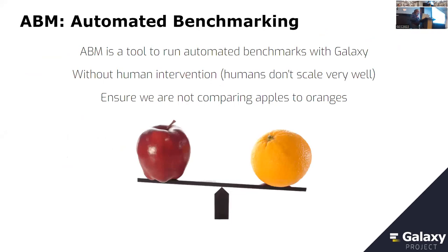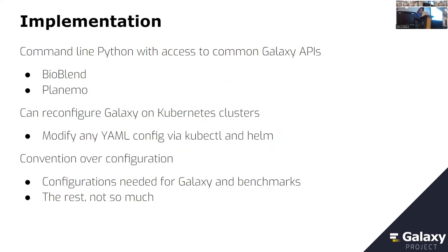We need to make sure we're running the same workflows on the same data with the same configuration to compare apples to apples. Amazon and Google have hundreds of different instance types — compute optimized, memory optimized — and when we factor in number of CPUs and amount of memory, the sheer number of possibilities makes the search space intractable. So we developed ABM — simply a Python command line tool that wraps common Galaxy APIs such as BioBlend and Planemo. Since AnVIL runs on Kubernetes, it can also interact with kubectl and Helm to reconfigure the Galaxy instance, run a benchmark, reconfigure again, and run another benchmark.